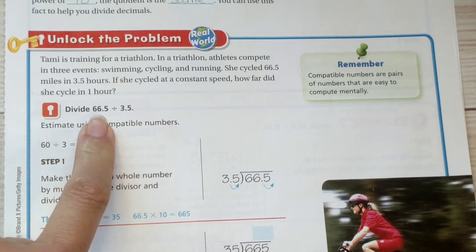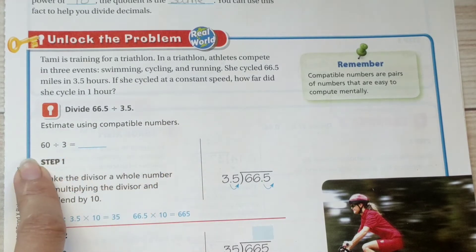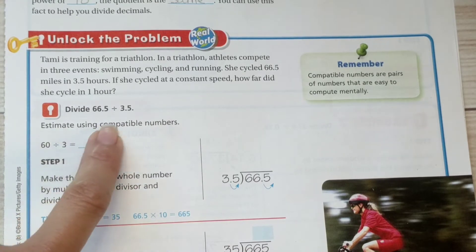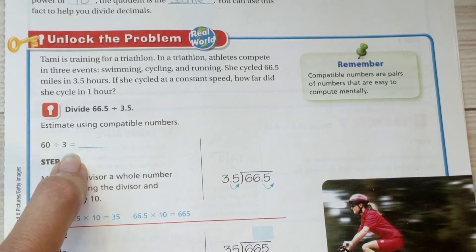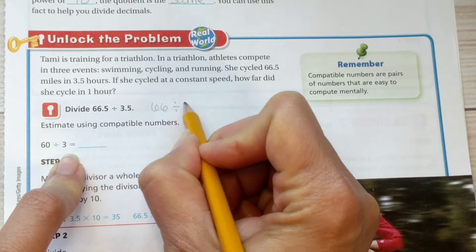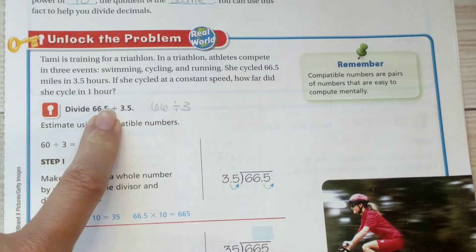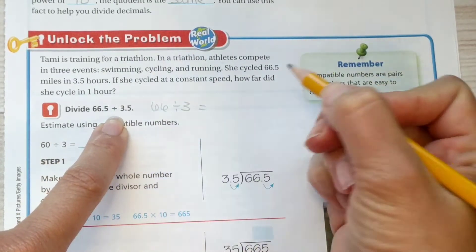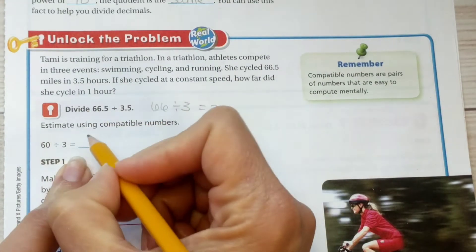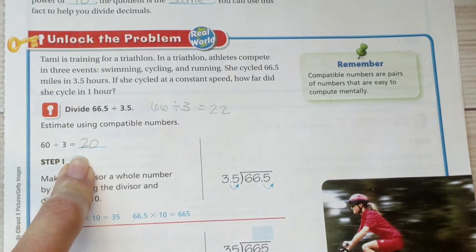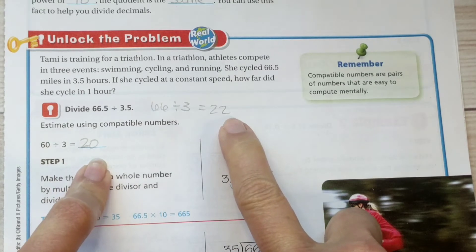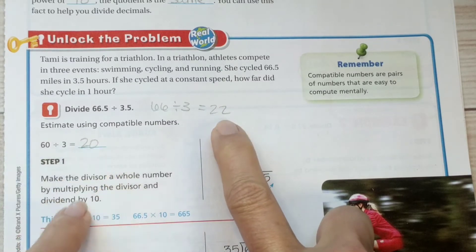First we're going to estimate using compatible numbers. 66 is pretty close to 60, and 3.5 is pretty close to 3, which is fine. I would have gone with 66 divided by 3, only because they're easily divisible. I'd end up with 22. Over here, I'd end up with 20. You can see that our final answer will be in the ballpark of 20. Either one is fine, it really doesn't matter as long as you're close.